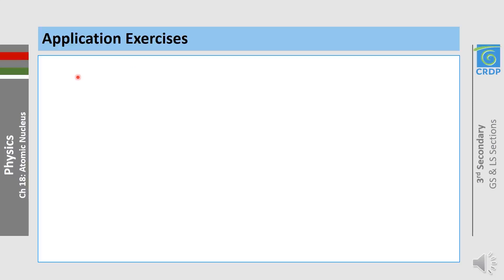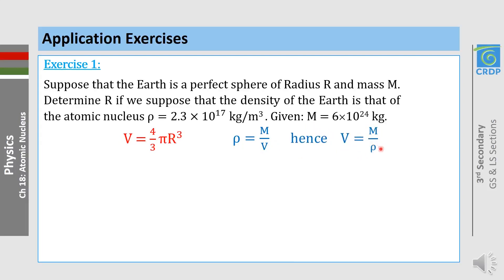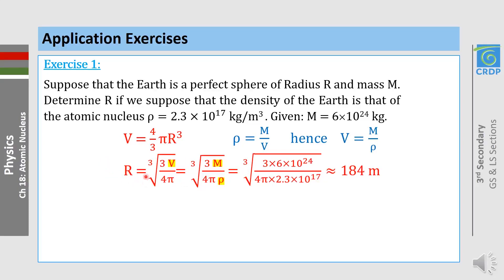Exercise 1: Suppose that the Earth is a perfect sphere with radius R and mass M. Determine R if we suppose that the density of the Earth equals that of the atomic nucleus ρ (given), and the mass of the Earth is also given. Using V = (4/3)πR³ and ρ = M/V, we get R = ∛(3M / 4πρ). Applying the numbers, we get approximately R ≈ 184 meters.